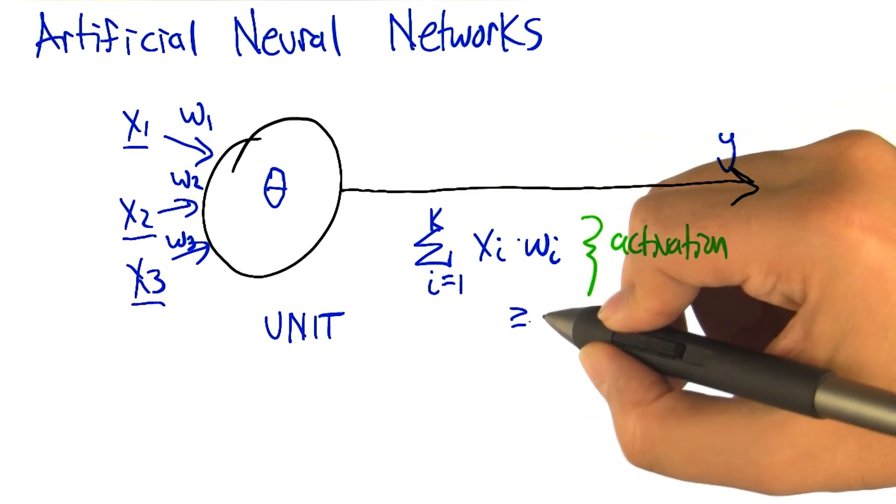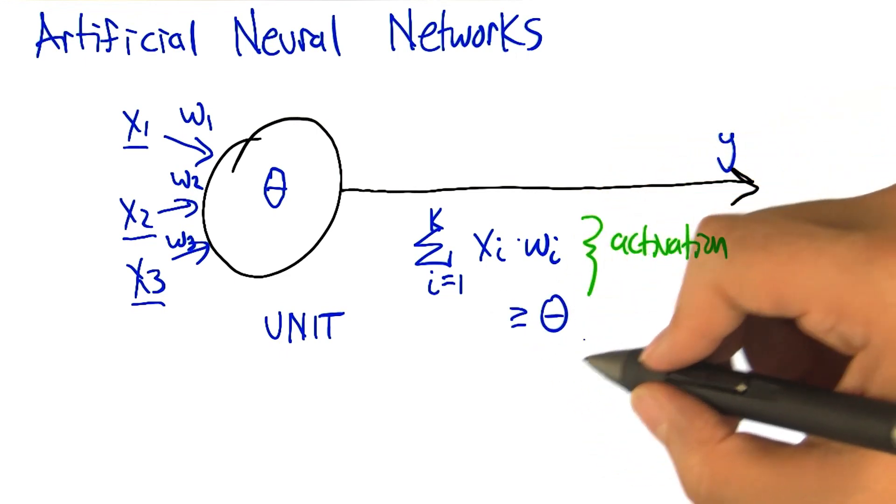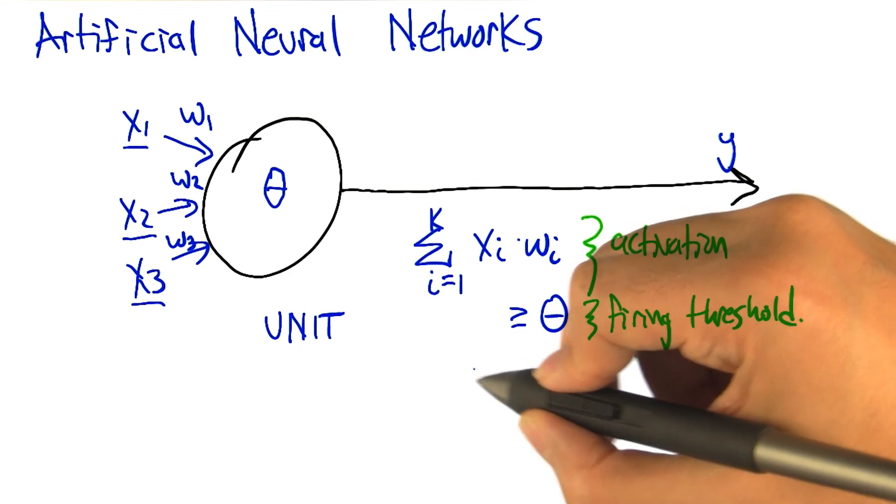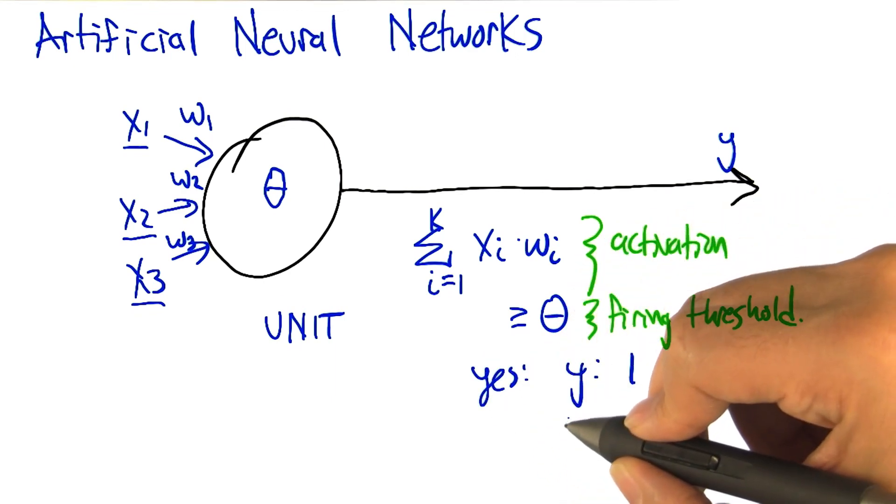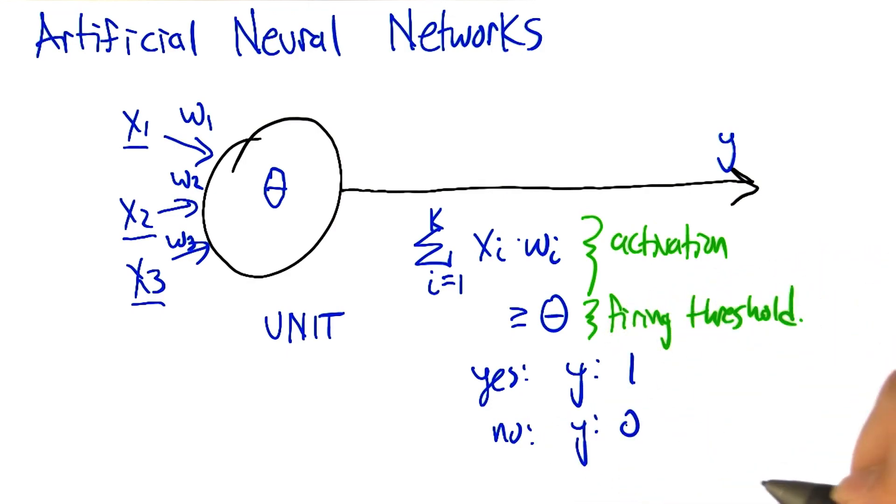Then we're going to ask, is that greater than or equal to the firing threshold? And if it is, then we're going to say the output is one. And if it's not, we're going to say the output is zero.